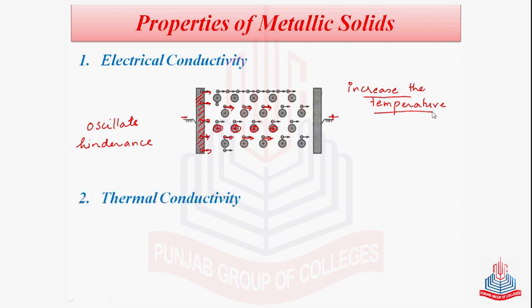Moving on to another property — thermal conductivity. If a piece of metal is heated at one end, after some time it will be hot throughout the structure. The mobile electrons at that end absorb heat energy and move very rapidly. Their movement involves collision with adjacent electrons, transferring energy to the next electron. They absorb energy, move rapidly through the metal lattice towards the cooler end, and in this way metals are good thermal conductors because of the electrons moving and transferring heat from one part to another.